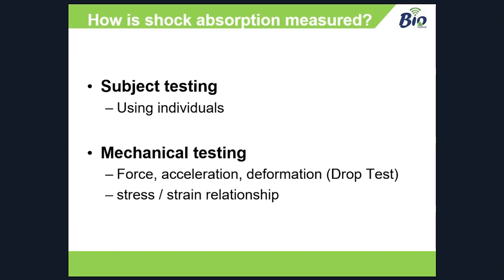There are two different ways to do testing. One is with actual live subjects, which is more real, but there are a lot more variables to consider and it's harder to control since each subject won't be identical. Conditions like heat and humidity are harder to control as well. If you're looking at specific conditions, subject testing might be the way to go. But if you're looking at material properties specifically, there are so many other factors involved that it's very hard to determine results. Generally, mechanical testing tends to be the preferred method. We have the drop test, but all that measures is force, acceleration, and then the deformation left in the material.